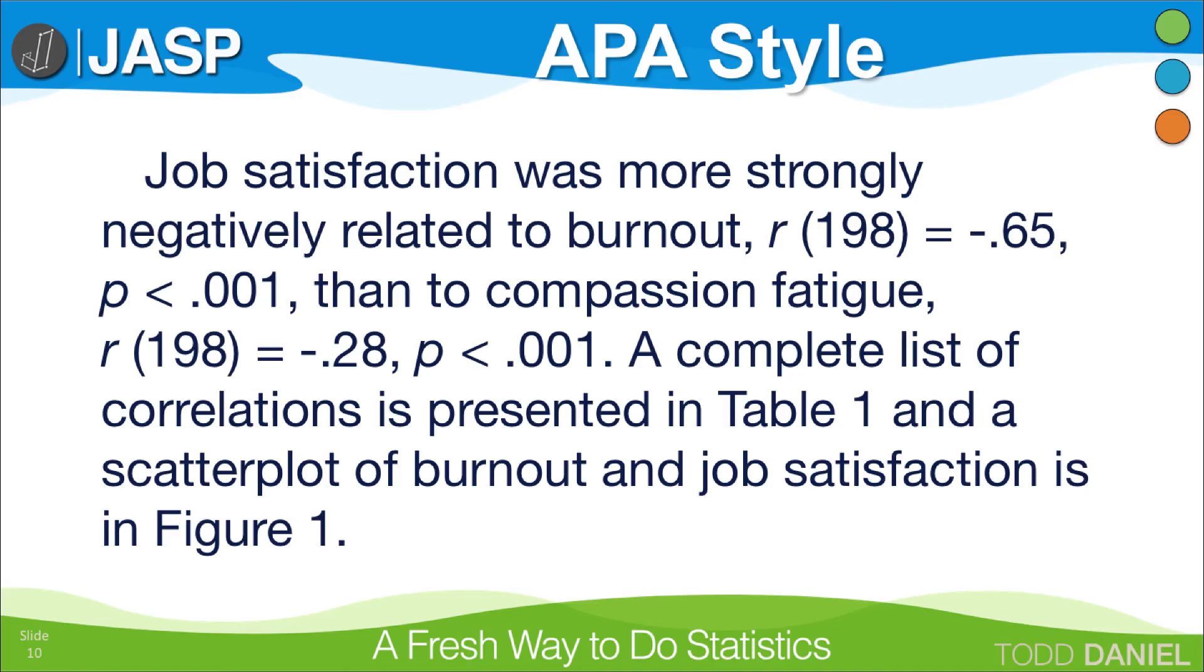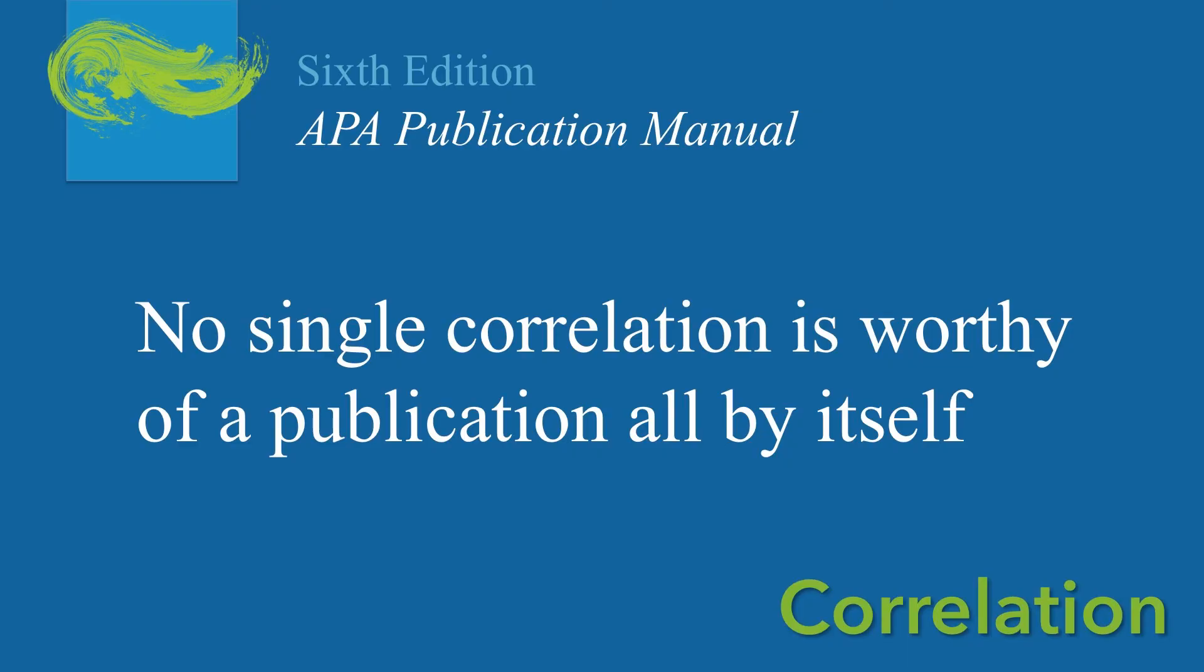Because I was interested in the relationship between burnout and the other two variables, I reported only those correlations. But I included a table with all of the other correlations, and I will create a scatter plot for burnout and job satisfaction. This would be a good time to remind you that the APA publication manual states that no single correlation is worthy of a publication all by itself. In other words, if you correlate only two variables, don't expect to publish that. It is a good exercise for a class, but not important enough to advance the science in your field. The solution is to make your research design more robust, and measure more than just two variables.